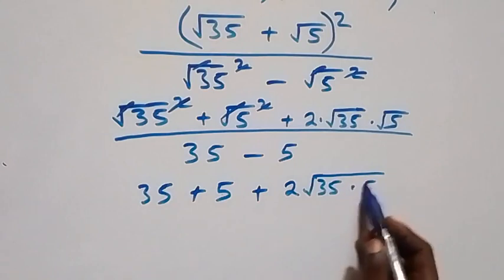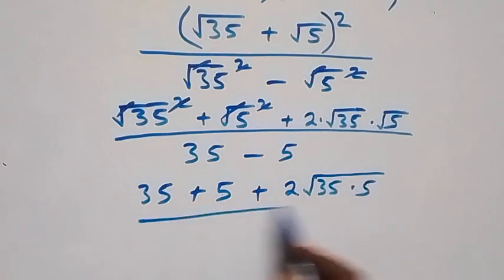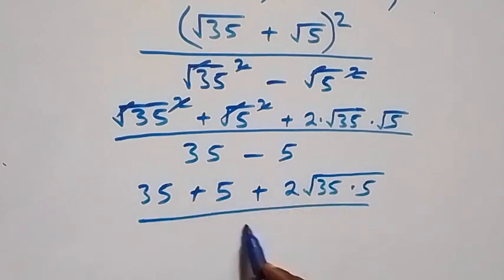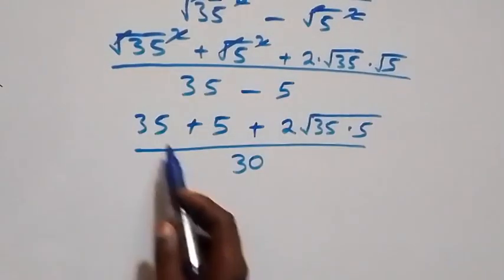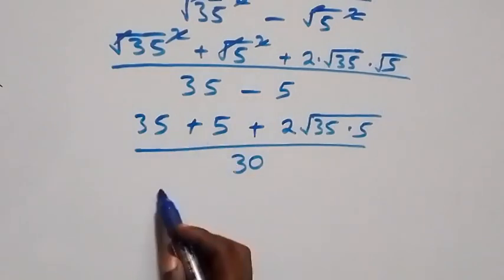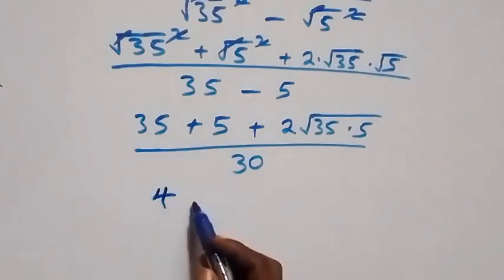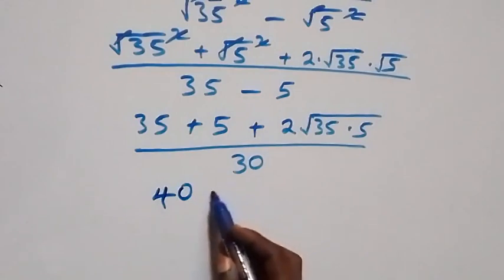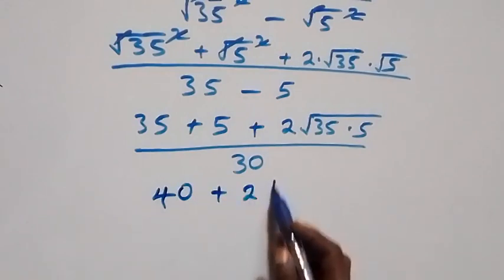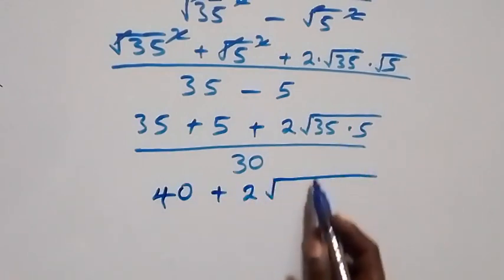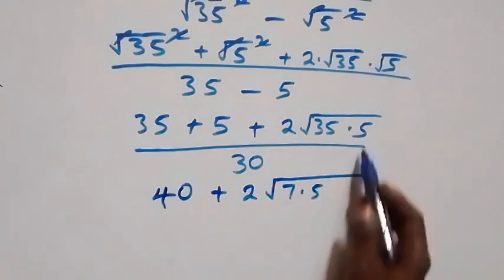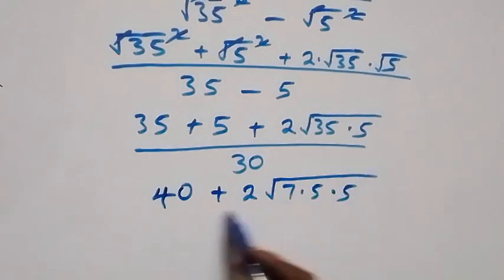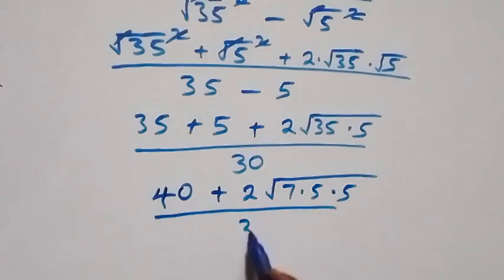Up in the numerator, square cancels square root to give 35, plus square cancels square root to give 5, plus 2 × √35 × √5. We can bring √35 × √5 together as √(35 × 5). The denominator is 35 minus 5, which is 30.